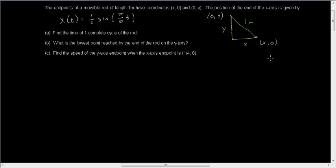Now we have our picture. We have a movable rod of length one meter with coordinates (x, 0) and (0, y) for its endpoints, and the position on the x-axis is given by that equation.